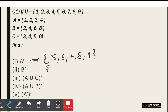Now B complement means elements present in the universal set but not in B. B = {2, 4, 6, 8}, so going through the universal set: 1 is not in B, 3 is not in B, 5 is not in B, 7 is not in B, 9 is not in B. So B complement = {1, 3, 5, 7, 9} — 5 elements. We can check that B union B dash equals the universal set.